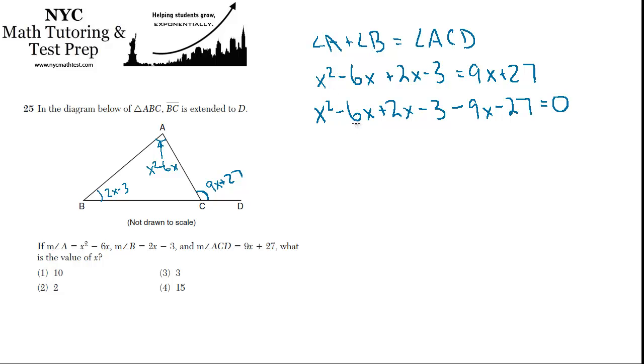Combining like terms, we have minus 6 plus 2 is minus 4, minus 9 is minus 13. So x squared minus 13x minus 3 minus 27 is minus 30 equals 0.